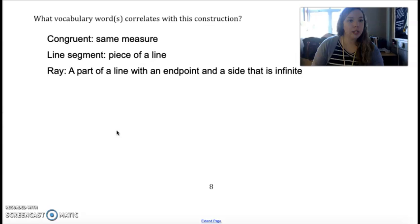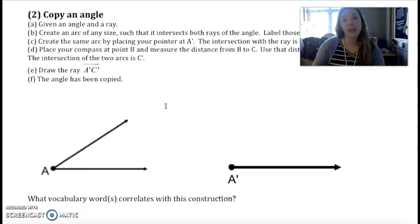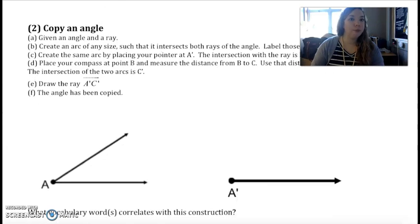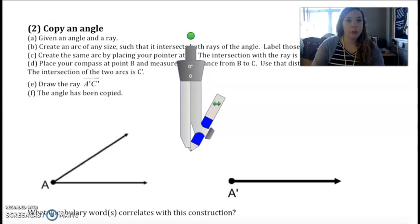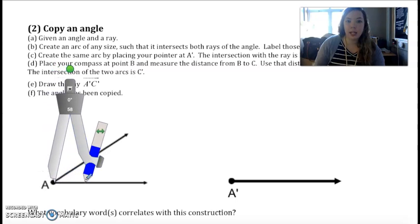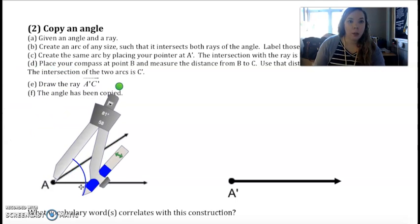Let's move on to number two: copy an angle. Given an angle and a ray, our original is A and our new image is A prime. It says create an arc of any size such that it intersects both rays of the angle. So with our compass, I'm going to make this a little wider, but it can be any length. You just want to make sure when you draw it, it will intersect both.